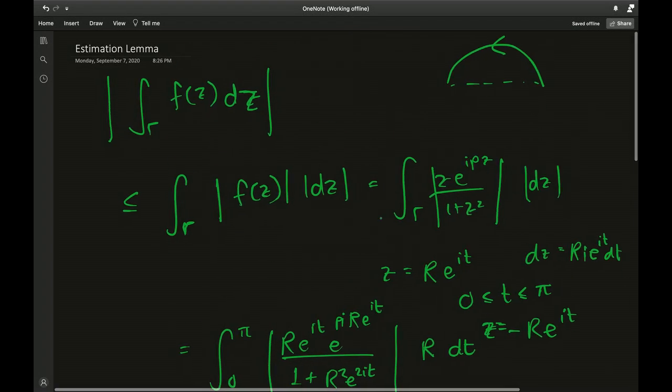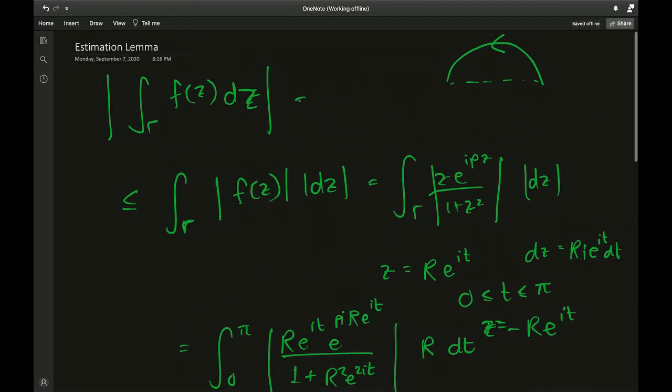So it equals 0. The mod of this guy is actually less than or equal to 0. Now a mod can never be less than 0, it's always positive by definition, so it has to be 0. It's trapped, it has to go to 0. That's the estimation lemma: this integral over gamma goes to 0.